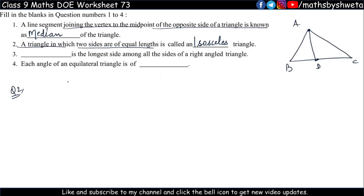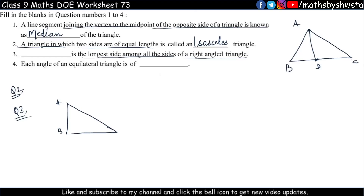Question number 3: What is the longest side among all the sides of a right-angle triangle? Tell the right-angle triangle — which side is the most important, i.e., the longest? In a right-angle triangle there will be three sides, and the longest side is the hypotenuse.